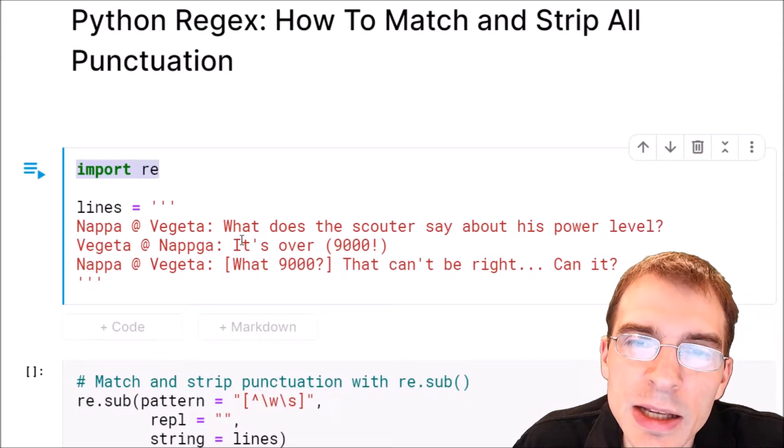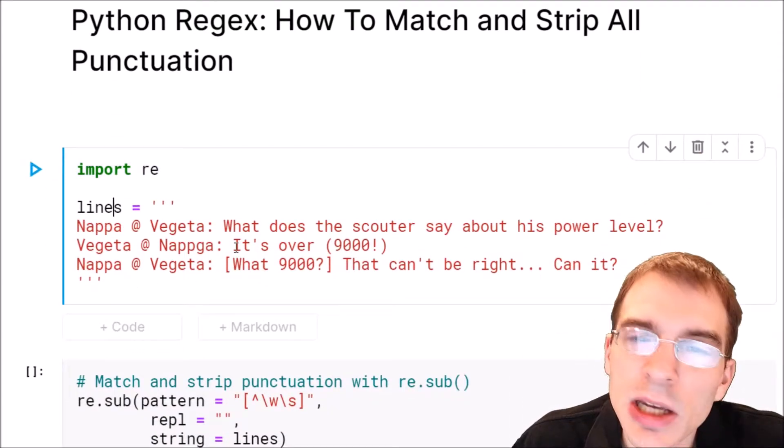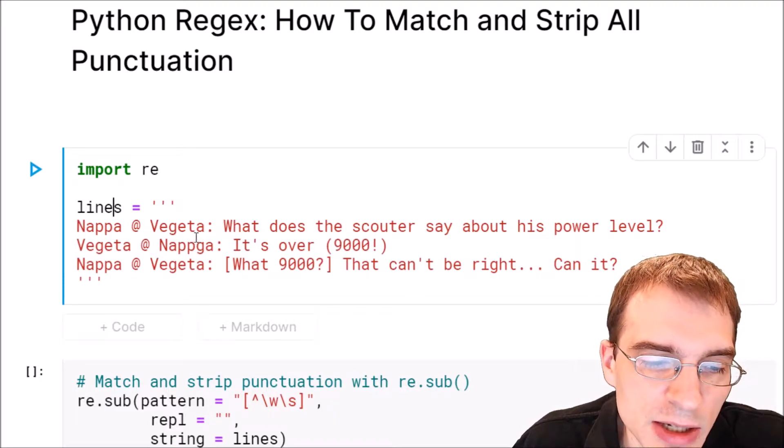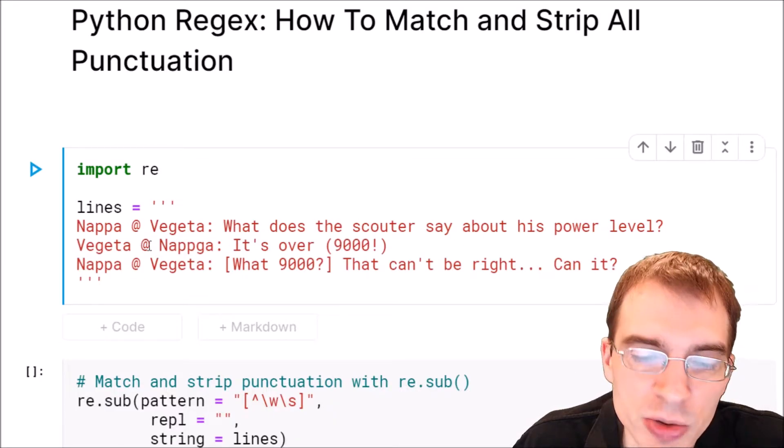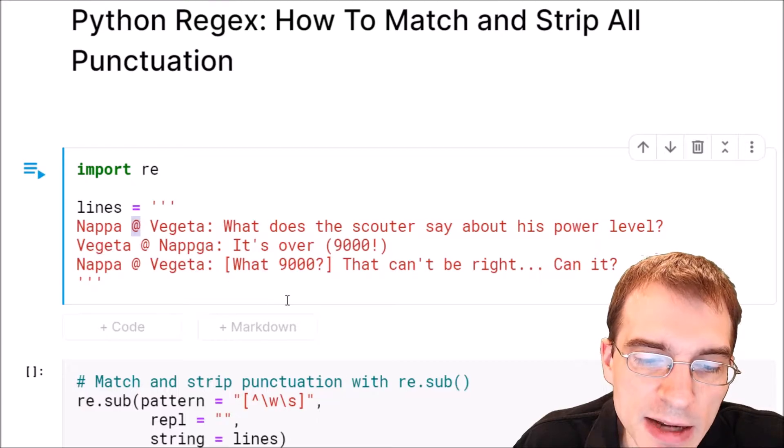These are the lines of text data that we're going to work with, and you can notice that the text here contains various punctuation characters. We have some at symbols here, some parentheses and brackets, some question marks, a colon.